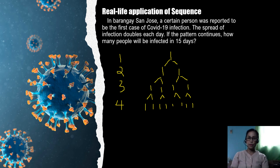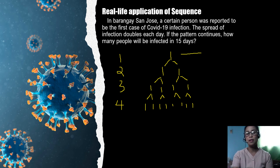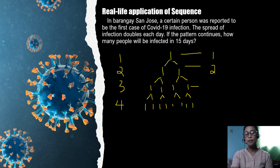Now let's try to organize our data. On the first day, there's one. Second day, we have two. Third day, a total of four. On the fourth day, we have a total of eight.